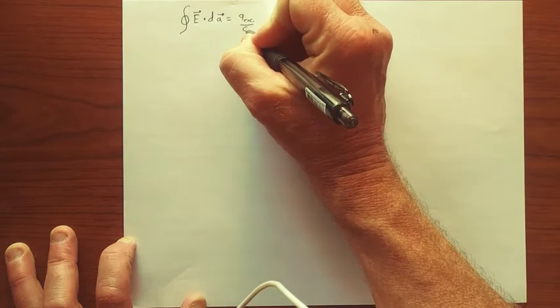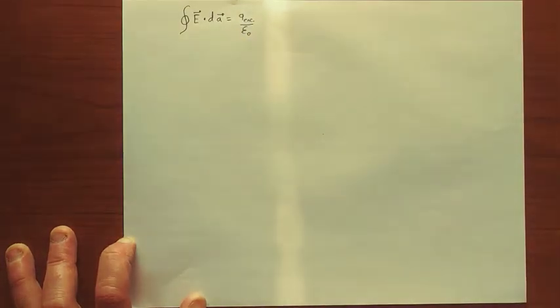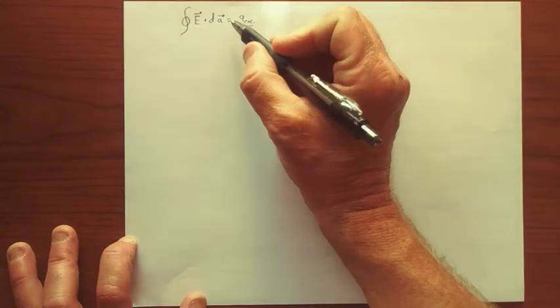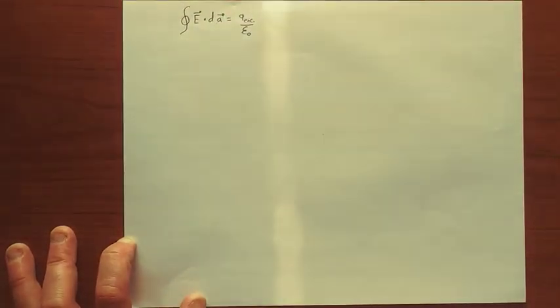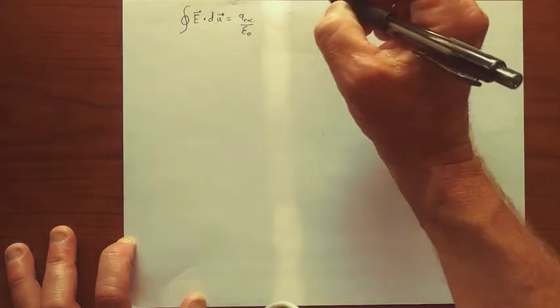That's equal to Q enclosed over epsilon naught. And the reason for that is because electric fields diverge radially away or towards the source of the electric field, which is charged particles. And so there's actually a version of this. There's a mathematical theorem that will take this integral equation and turn it into a differential equation.